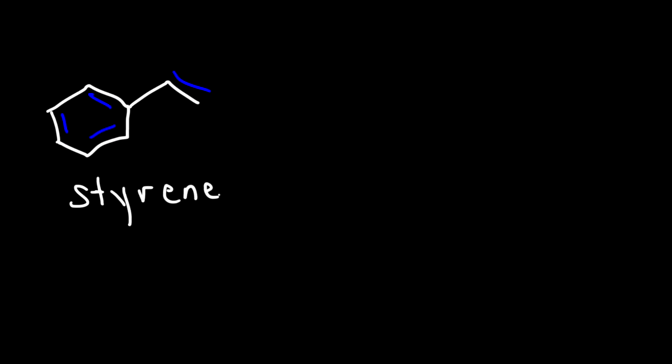What is the common name for a benzene ring with a carbon-carbon double bond attached to it? The common name is styrene. This is also called vinylbenzene because this is a vinyl group.